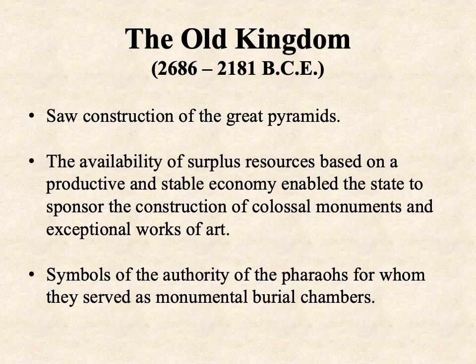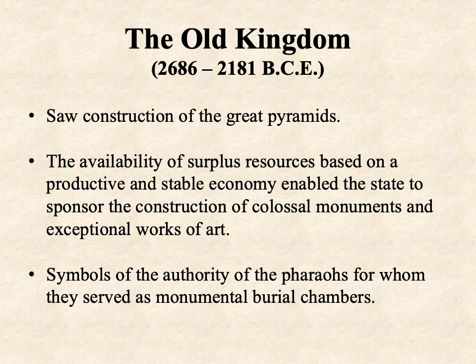The Old Kingdom precisely begins in 2686 and ends in 2181 BCE. This is when all of the Nile Valley becomes united into one kingdom. The most defining characteristic — and the one most people are familiar with — is the construction of the great pyramids. Most people imagine pyramid-building was going on for the entirety of ancient Egyptian history, but that's not the case; it really only took place during the Old Kingdom, after which they stopped building pyramids.